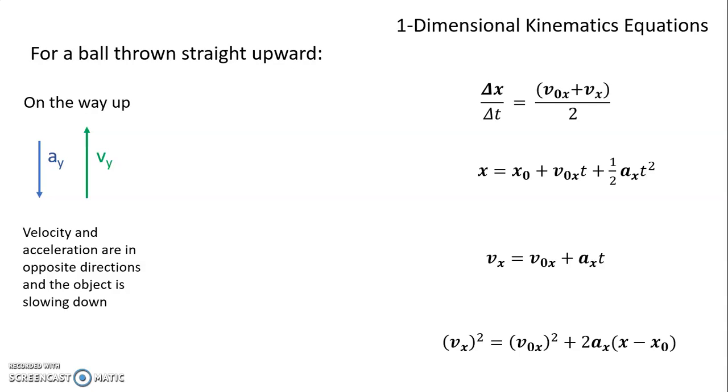So it's in free fall. We're talking about right after it's left your hand all the way up until it gets to the peak. Acceleration is downward, velocity is upward. The velocity will be getting smaller and smaller. The acceleration will stay the same the whole time.